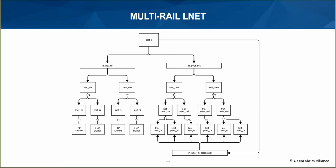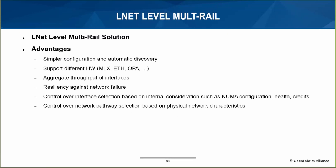LNet's internal structure now allows multiple networks to be configured, each network can have many network interfaces, and LNet maintains a database of all the peers it talks to — each peer has multiple networks and each network can have multiple interfaces. To summarize, an LNet-level multi-rail solution fulfills all the requirements: it reduces configuration complexity, allows use of multiple homogeneous and heterogeneous interfaces simultaneously aggregating their throughput, and allows LNet to intelligently select local and remote interfaces based on its own criteria as well as user-specified selection policies.